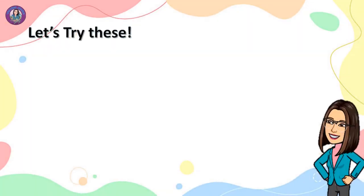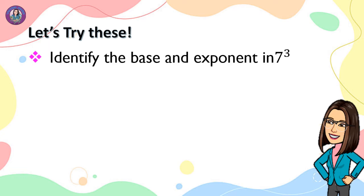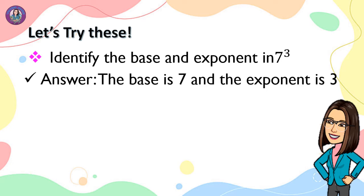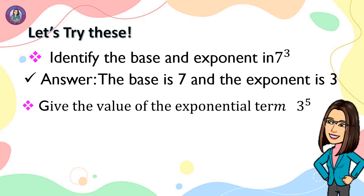Let's try this. Identify the base and the exponent in 7 cubed. Answer: the base is 7 and the exponent is 3. Give the value of the exponential term 3 raised to 5. The value of 3 raised to 5 is the same as 3 times 3 times 3 times 3 times 3. Multiplying the repeated factor 3 yields 243.